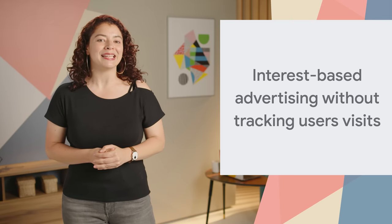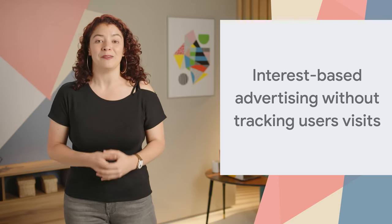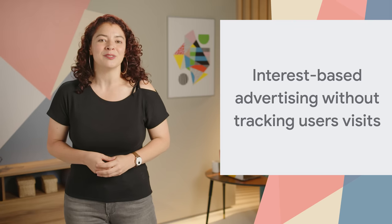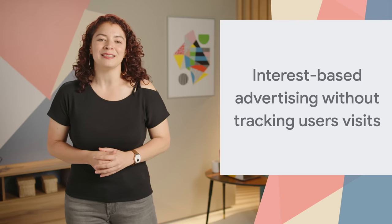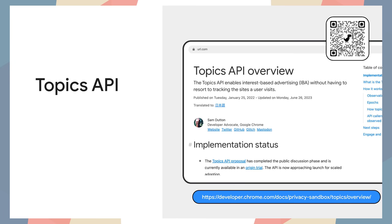In the past, third-party cookies and other mechanisms have been used to track user browsing behavior across sites to infer topics of interest. These mechanisms are being phased out as part of the Privacy Sandbox initiative. The Topics API allows a browser to share information with third parties about a user's interests while preserving privacy. It enables interest-based advertising without tracking the sites a user visits. The browser observes and records topics that appear to be of interest to the user based on their browsing activity, and this information is recorded on the user's device.